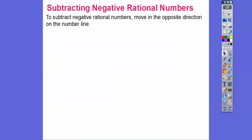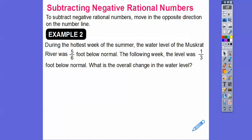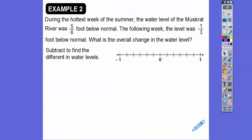To subtract negative rational numbers, move in the opposite direction on the number line. During the hottest week of summer, the water level of the Muscat Crap River was 5/6 of a foot below normal. The following week, the level was 1/3 foot below normal. What's the overall change in the water level? We're going to subtract these two numbers to find the difference.